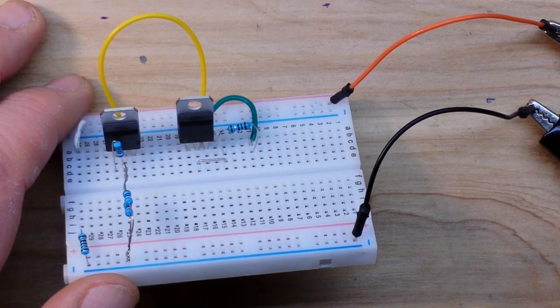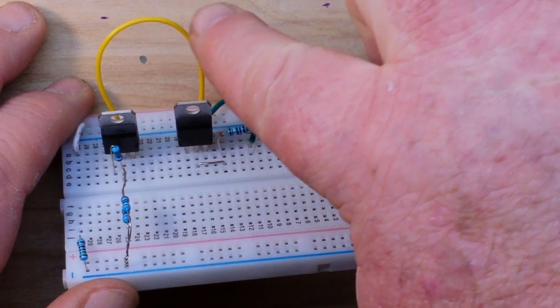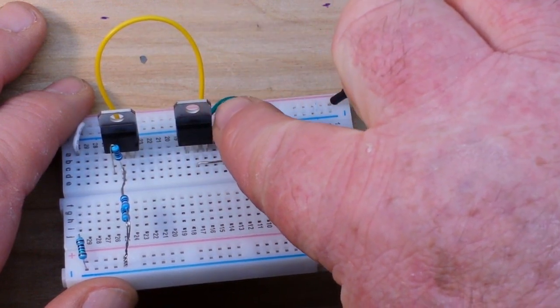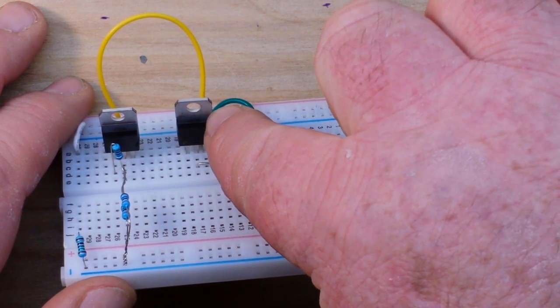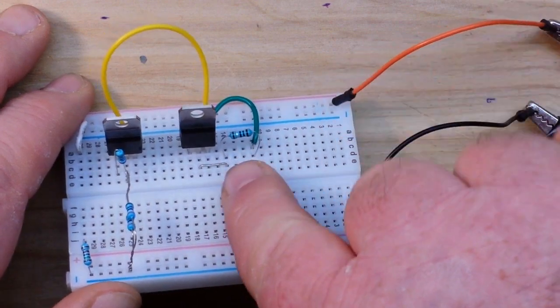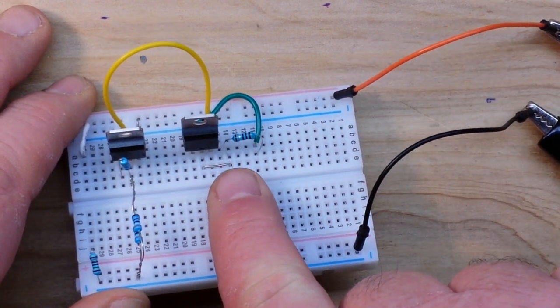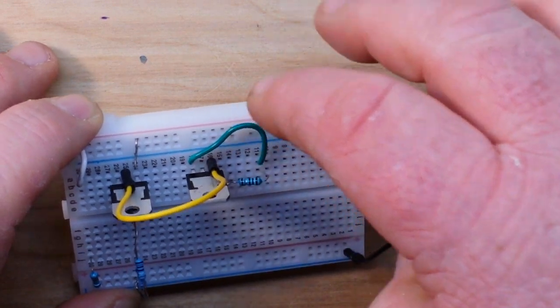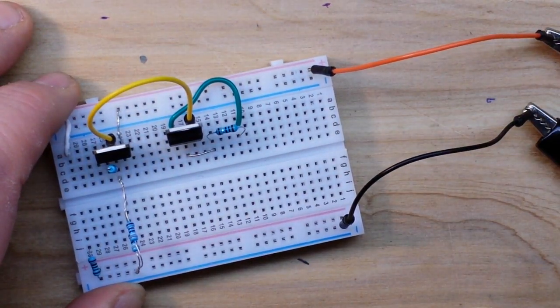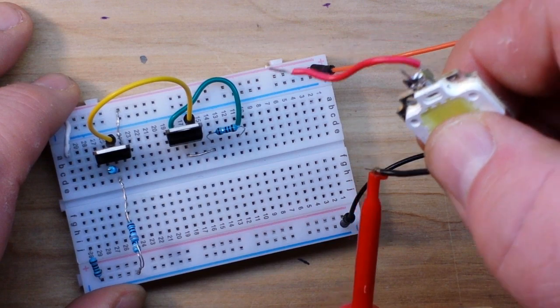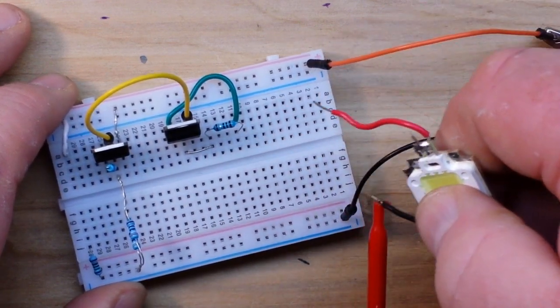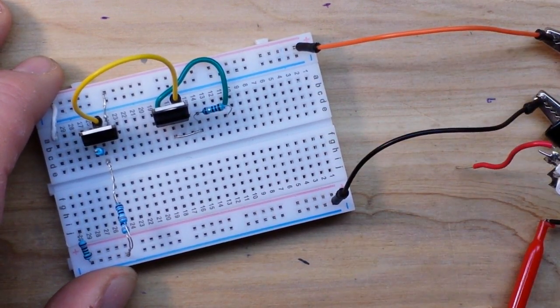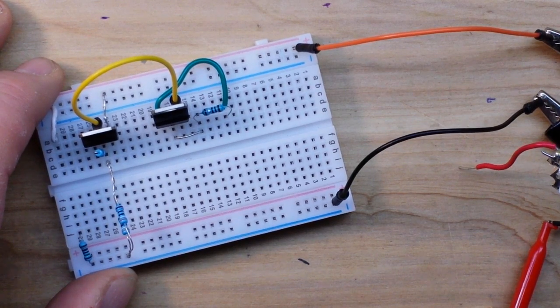All right so we're hooked up now. We've got our output from the first LM317 voltage regulator going into the input here. We have the output here, little jumper wire coming over there. The output goes to the adjust pin, and then we will hook up our LED here and plug it in and hook up the voltmeter and we'll see what we get.